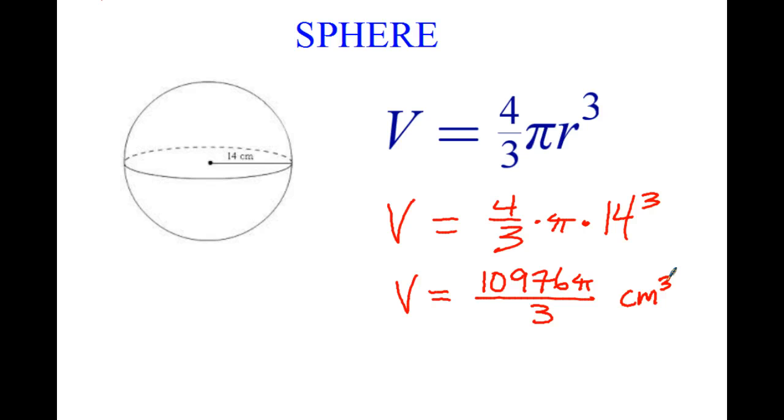And so what this is is 10,976 times pi, and then we're going to divide it by 3, and it's going to be cubic centimeters. Well, if I look at this, pi is a little more than 3, and I'm going to divide this by 3. So once I actually calculate this and multiply it with pi, I should end up with something slightly below this. Actually, this should be a little bit higher. So it should be maybe like 11,200, 11,300, something like that. So let's go ahead and calculate it out.